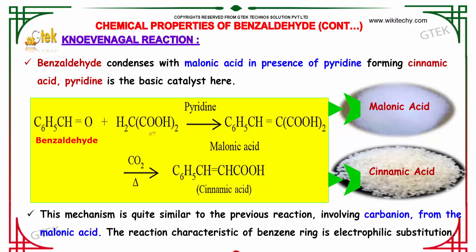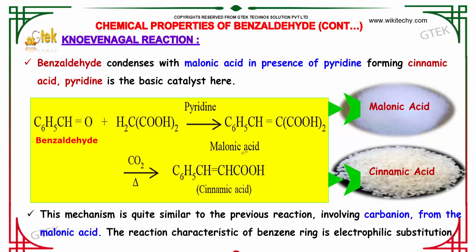Knoevenagel reaction: Benzaldehyde condenses with malonic acid in the presence of a pyridine catalyst, forming malonic acid intermediate. After which, decarboxylation with carbon dioxide and heat yields cinnamic acid. The mechanism is quite similar to previous reactions, involving carbanion reactions from the malonic acid.